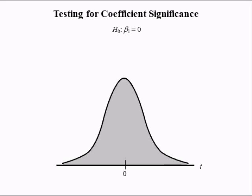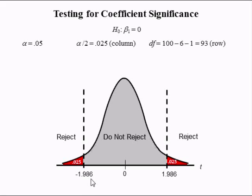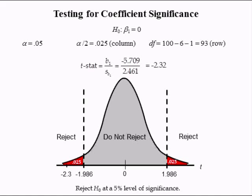The first null hypothesis is that B1 equals 0. With a significance level of 0.05, we divide alpha by 2 because this is a two-tailed test, so alpha divided by 2 is 0.025. The degrees of freedom equals 93. The T-stat was the ratio of the estimated slope coefficient and its standard error, which is negative 2.32. Negative 2.32 is in the lower tail, so we reject the null at a 5% level of significance.